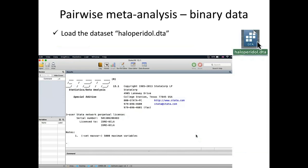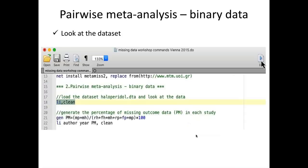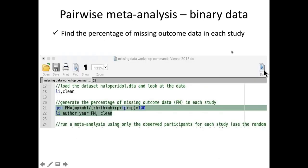Let's start with the dichotomous dataset, the haloperidol one. You can load it by drag and drop into Stata. Running the list command, we can see the data: the study name, the year, RH for the number of events in the haloperidol group, and RH for the number of non-events.